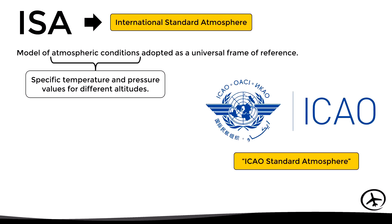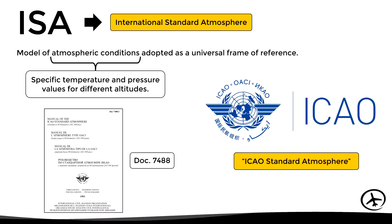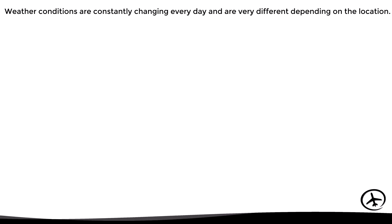Once the ISA model was created, it was published in ICAO Document 7488, where all the conditions and parameters used in the model are specified. But now the question is, why is the ISA model needed in aviation? Well, first of all we must say that the atmospheric conditions of a certain place are changing constantly depending on the season and local weather patterns.